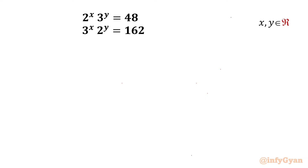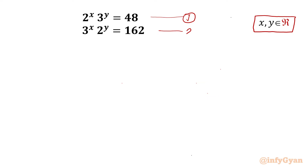Welcome to InfiGam friends. In this video we are going to take up one very interesting system of exponential equations: 2^x times 3^y equal to 48, and 3^x times 2^y equal to 162, where x and y belong to real numbers. I will solve this question in two different ways — Method 1 using exponent laws, and Method 2 using log.